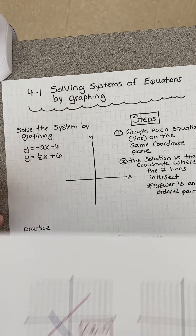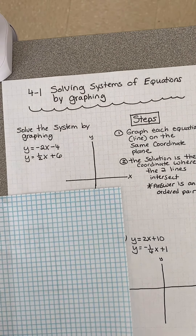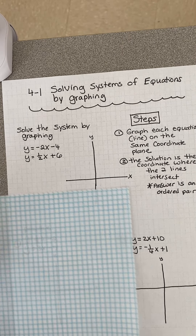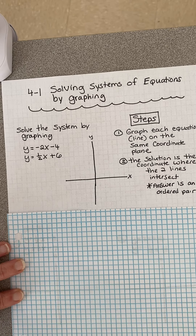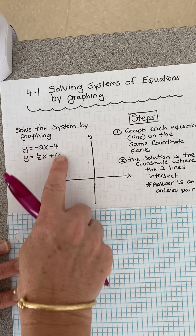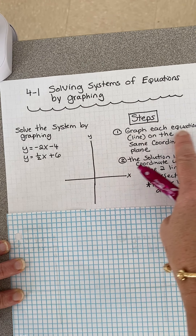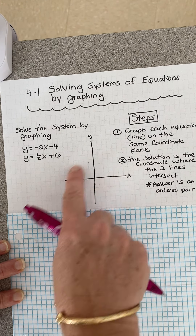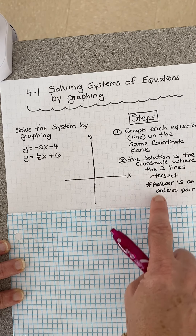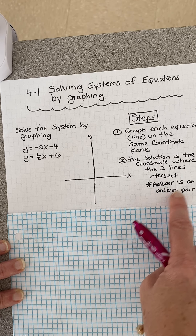That's the gist of it, and I'm going to go through with you how we do that. I just have my graph paper here because it's really difficult for you to see my lines. So it says solve the system by graphing. Here's the system - it's two lines, and they're both in slope-intercept form. We're going to graph each line on the same coordinate plane, and then the solution is where the two lines intersect. Our answer is going to look like an ordered pair, which is another name for a coordinate.